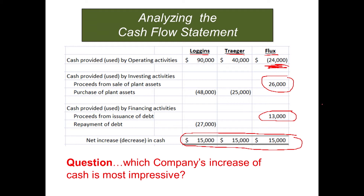Can you see where that picture for Flux is not good? The operations are a net drain on cash. They're having to sell their plant assets, which are probably there to help provide revenues and operate the business. So if you start selling your plant assets, that's going to deter your ability to operate. And they're getting a loan which they're going to have to pay back.